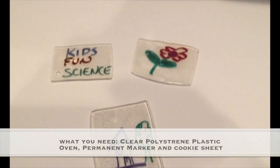As always, adult supervision is required. What you need for this experiment is clear polystyrene plastic with recycling number six, an oven, permanent marker, and a cookie sheet.